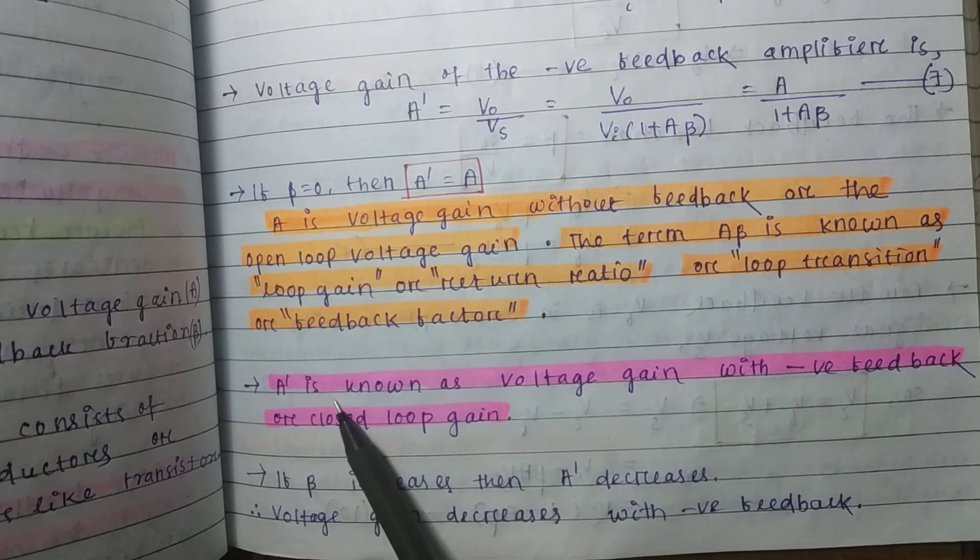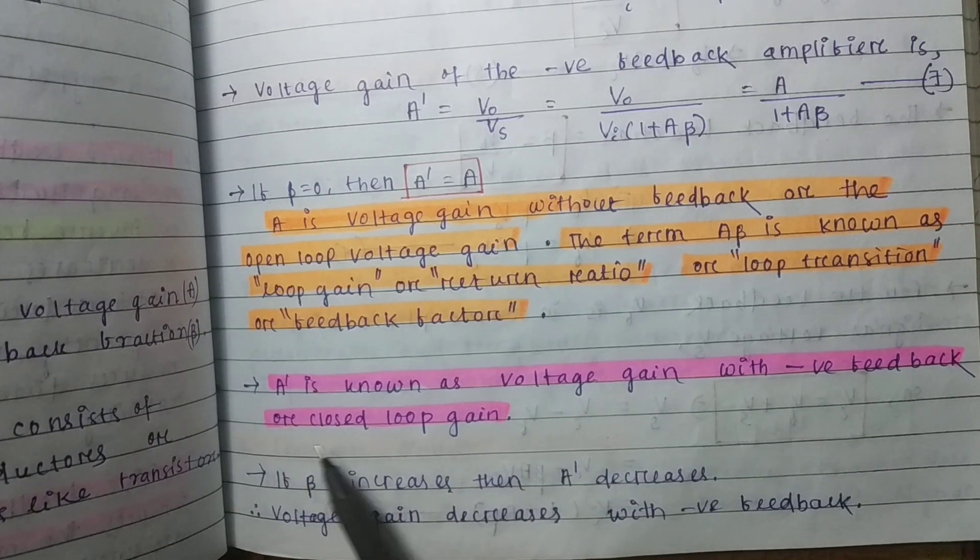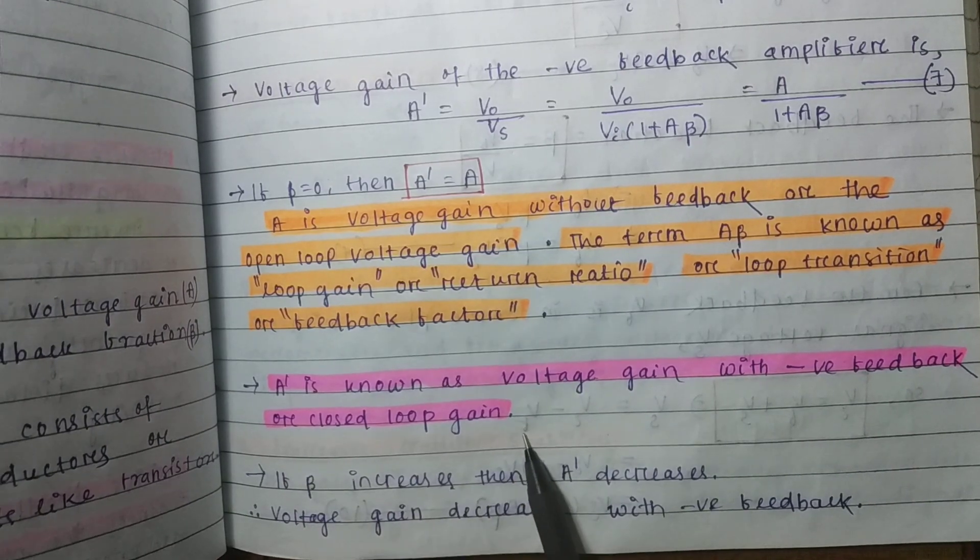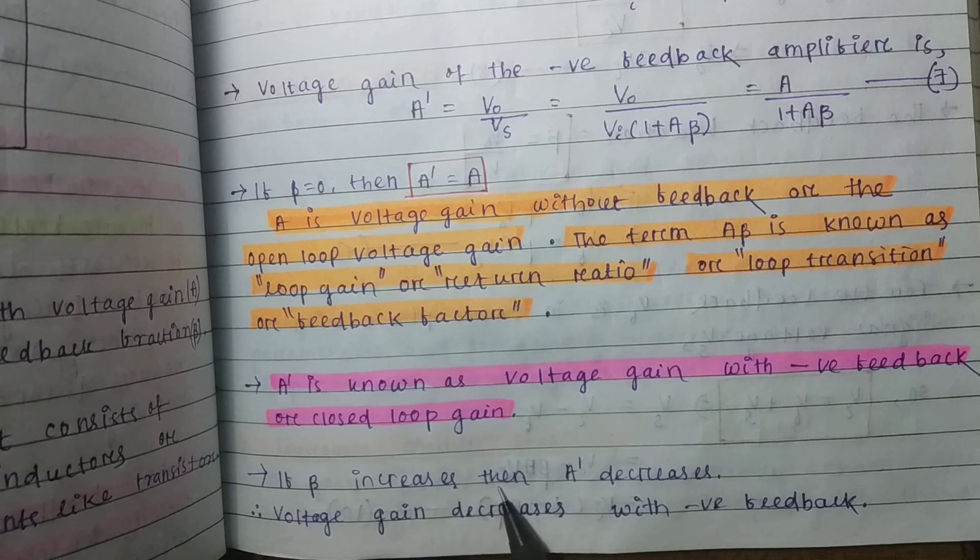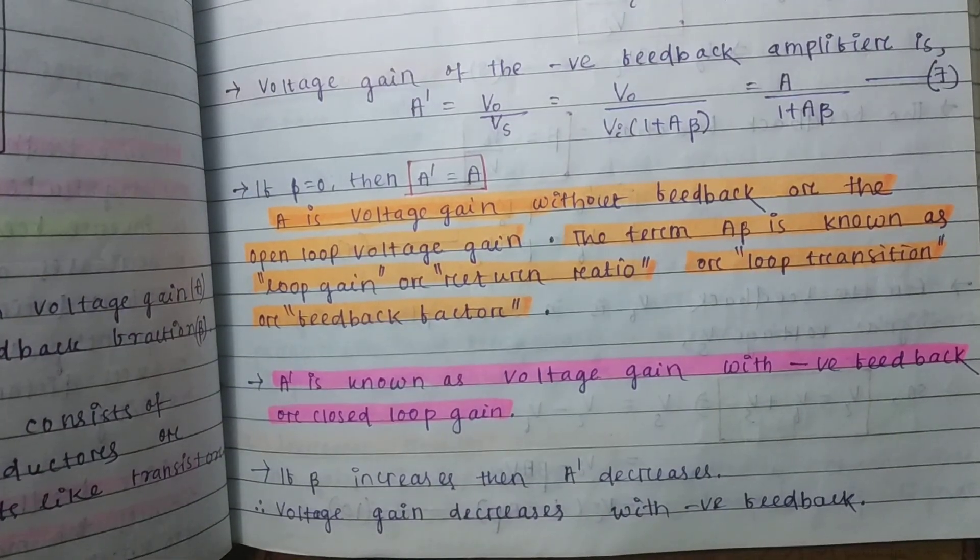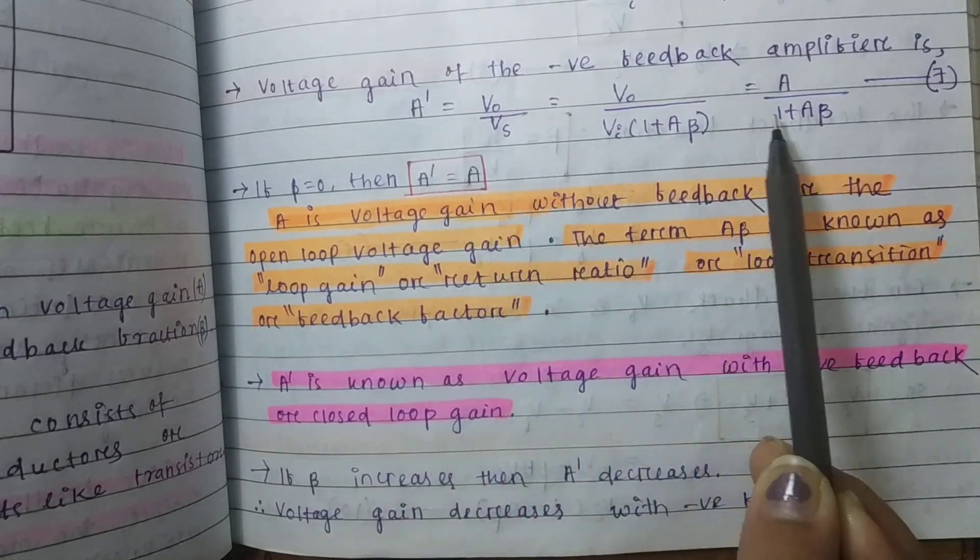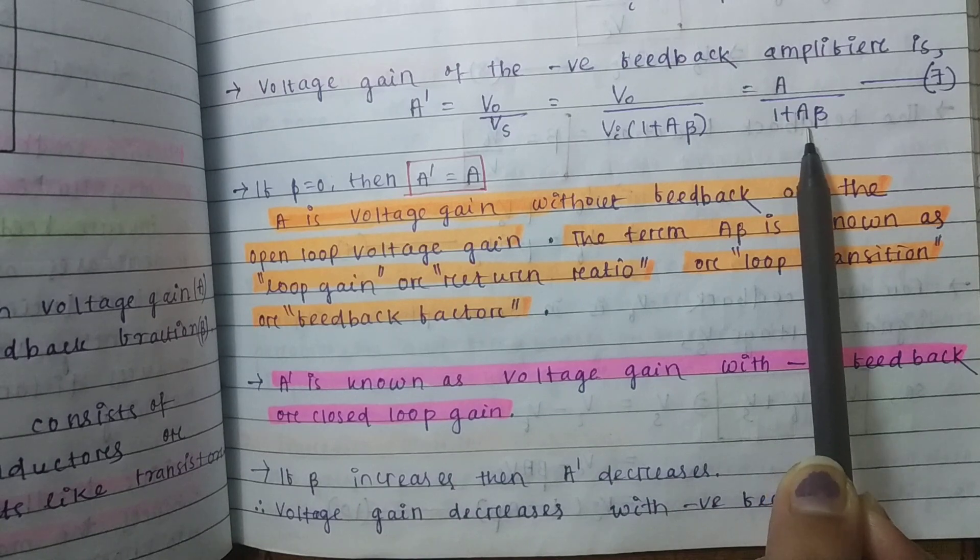A prime is known as voltage gain with negative feedback or closed loop gain. If beta increases, then A prime decreases because A prime and beta are inversely proportional to each other.